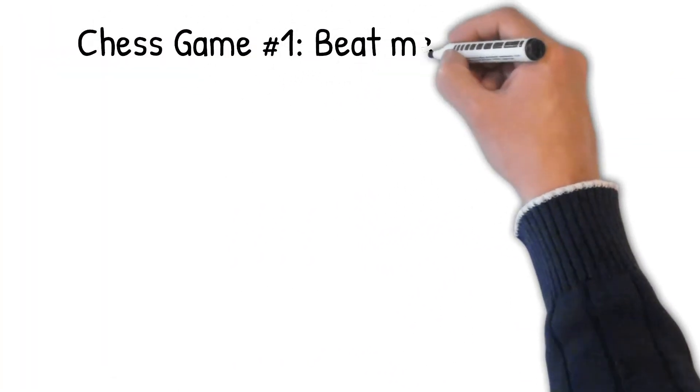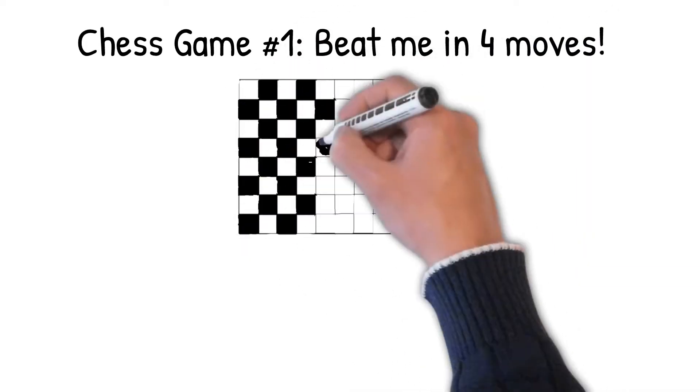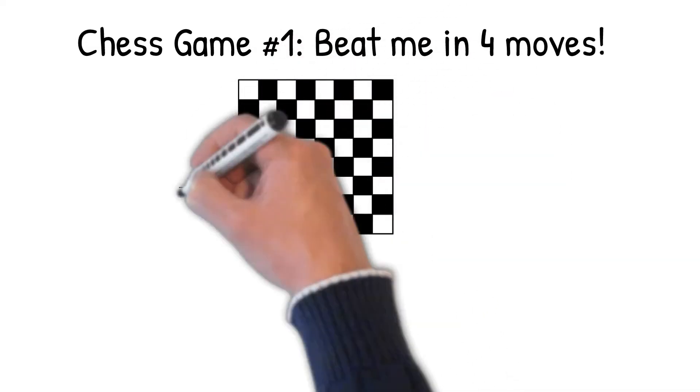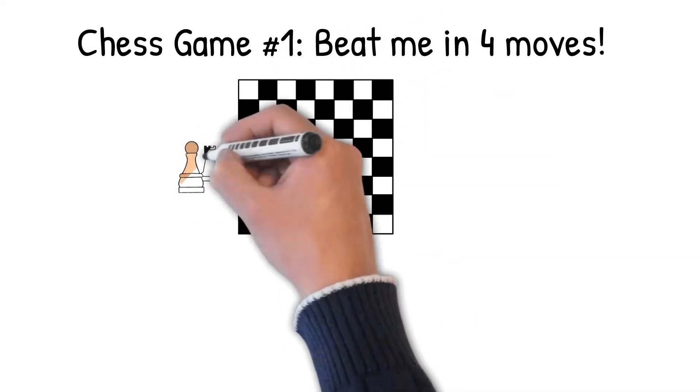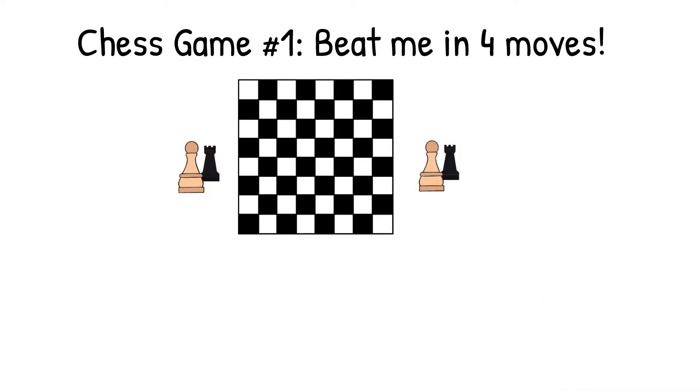We'll begin our discussion with a simple thought experiment. Imagine we're playing a chess game. I'm black and you're white, and I give you the instructions to beat me in four moves. If you don't beat me in four moves, you will lose the game. What type of behavior are you likely to have in playing this game?